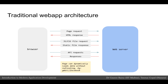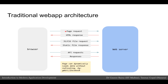A traditional web app works as follows. On the left there is a web app that is making a request to the web server on the right. The first thing the browser is used for is making a page request — for example, going to google.com. The web server responds with HTML data. The HTML contains links to JavaScript and CSS files. The browser parses that HTML, figures out that it needs to make requests to JavaScript and CSS files, makes those requests to the web server, and the web server responds with those static files, which the browser injects into the context of the HTML page.